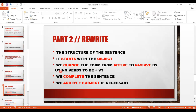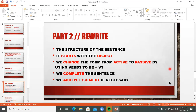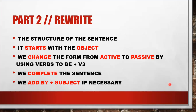The structure of the passive sentence: it starts with the object - لازم يبلش بالمفعول به. حطيت لونهم أحمر عشان تميزوا أنهم key words. تبدأ بالمفعول به، change the tense من active لـpassive عن طريق استخدام الـbe والتصريف الثالث، بعدين تكمل الجملة، وبعد التكملة تحكي by مع الفاعل في حال كان مهماً.